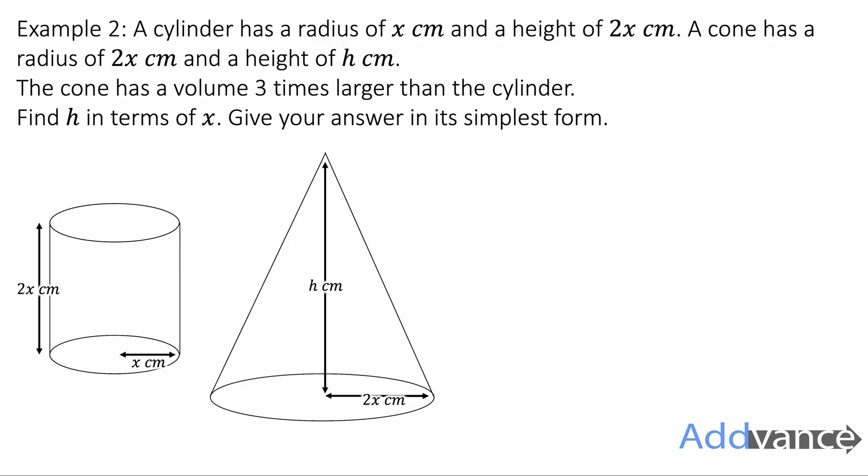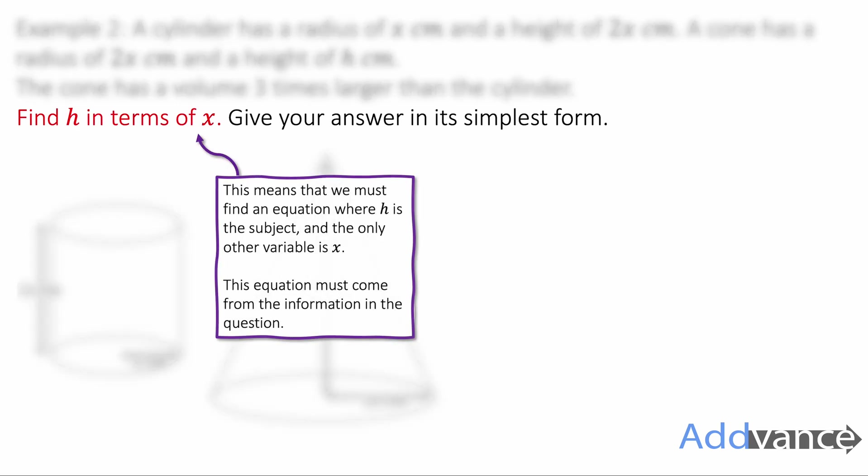Have you had a go? I'll now show you my working out. The first thing to talk about is this phrase here, h in terms of x. That means we find an expression for h where the only variable is x in that expression. Some examples might look like this: h is 2x or h is 5x plus 3. Those are expressions for h in terms of x.